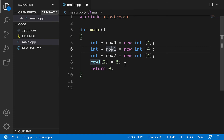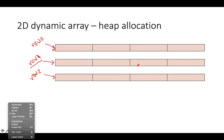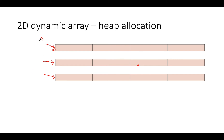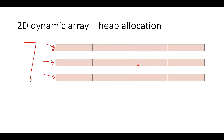C++ provides the concept of arrays to manage a bunch of variables of the same type. So instead of having individual pointers, I can create an array of pointers. I'll delete those individual pointers and replace them with an array. Each individual element of this new array is going to be an integer star, and I'll use each element to point to one of the single-dimensional row arrays.